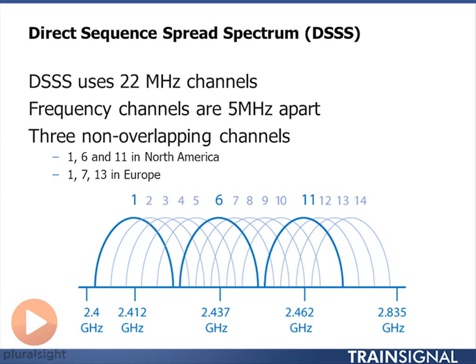If you go to Europe, they actually have more spectrum available and different regulatory rules, so Europe allows 13 channels. It's very common in Europe to deploy your Wi-Fi network on channels 1, 7, and 13, which are also non-overlapping. Because they're a little further apart, it avoids a bit more adjacent channel interference.